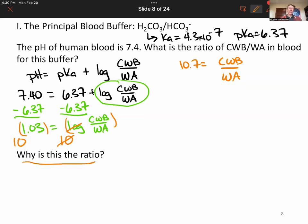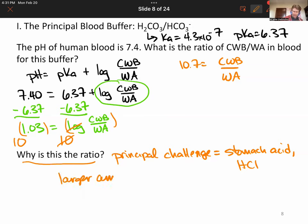So the next question we're going to ask is, why is this the ratio? And the answer is that the principal challenge or the principal reaction that this can go through is from stomach acid. And stomach acid is essentially hydrochloric acid, a strong acid. So this buffer needs to have a lot more conjugate weak base to react this strong acid away. So larger amount of conjugate weak base can react away a lot of HCl while keeping the buffer relatively strong and intact.